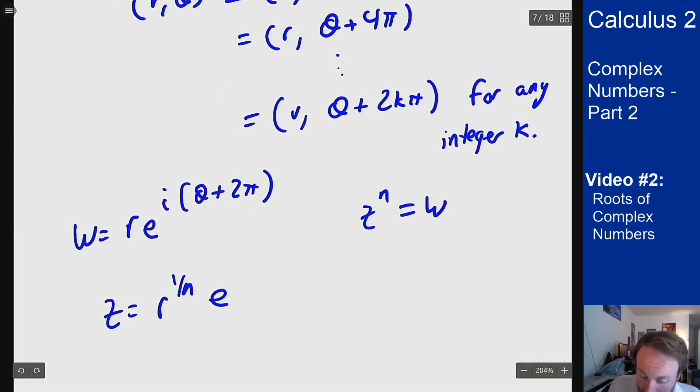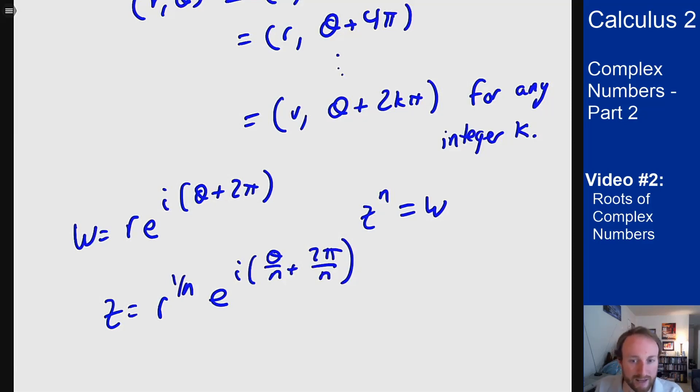Well in this case this is going to mean e to the i theta over n plus 2 pi over n which is not the same complex number as just theta over n because it's not a difference of multiple 2 pi anymore. It's 2 pi over n which shifted it but not a full way around the circle.